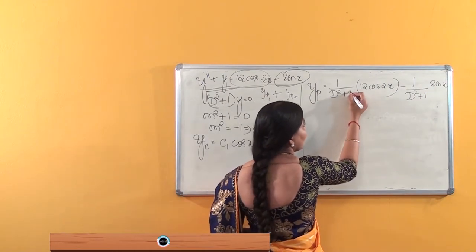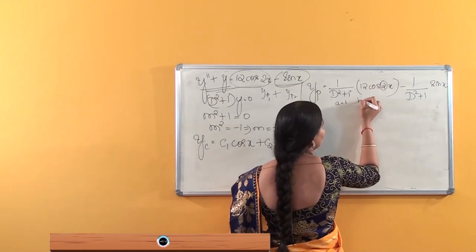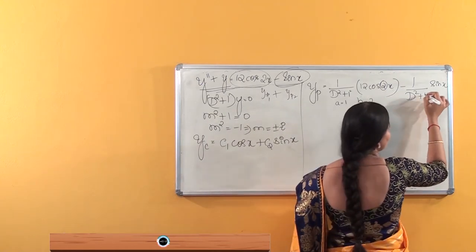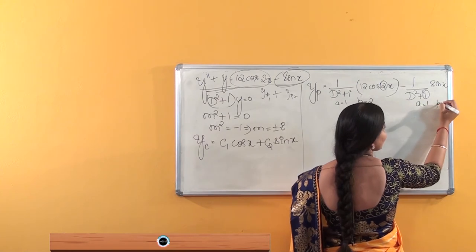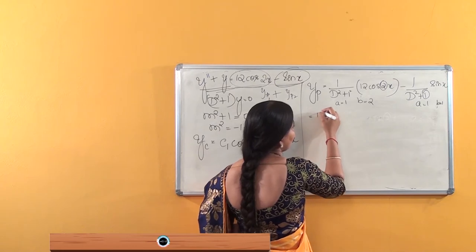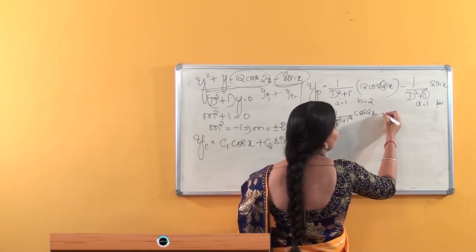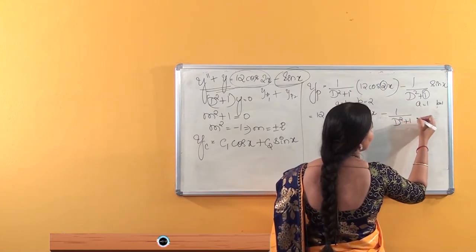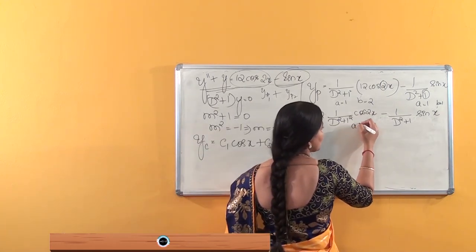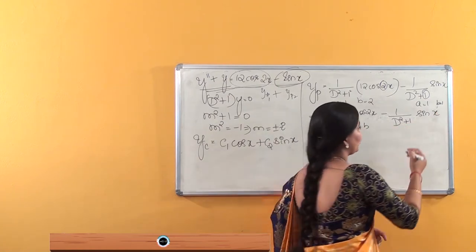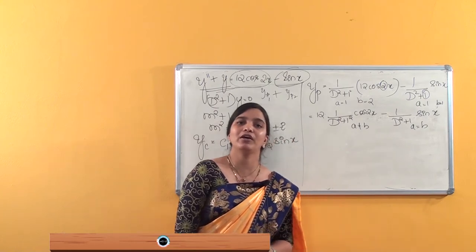Observe here — in the first term, A is 1 and B is 2, so A is not equal to B. In the second term, if no coefficient is written it is 1 itself, so A is 1 and B is 1, meaning A is equal to B. So for the first term you use the formula when A ≠ B, and for the second term you use the formula when A = B.